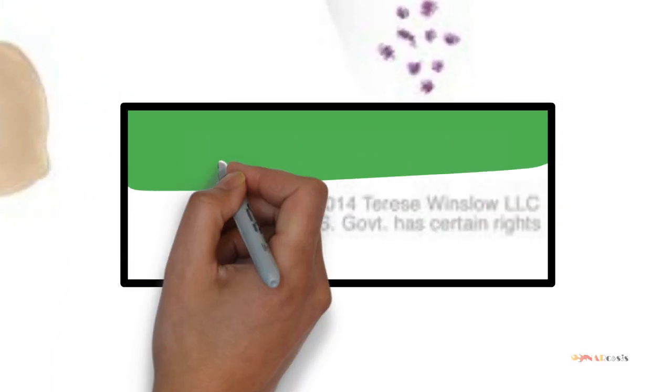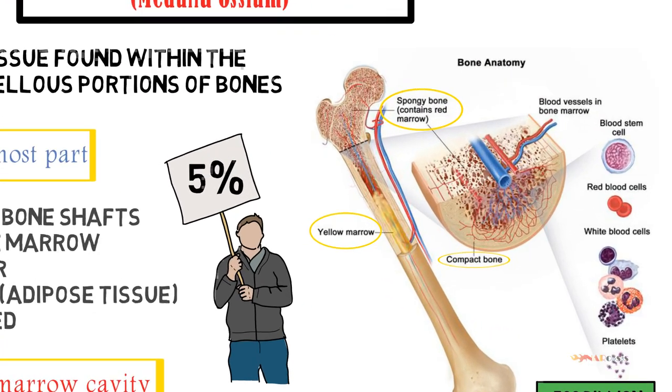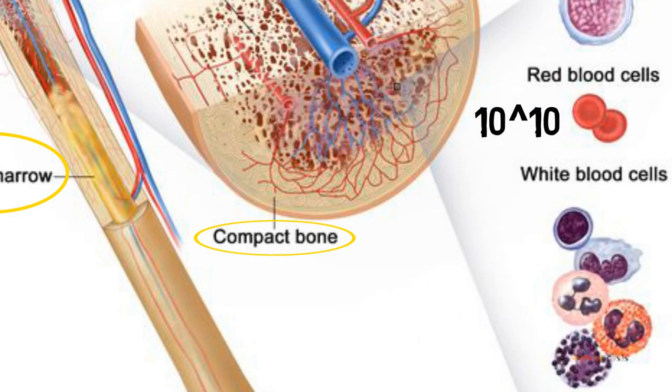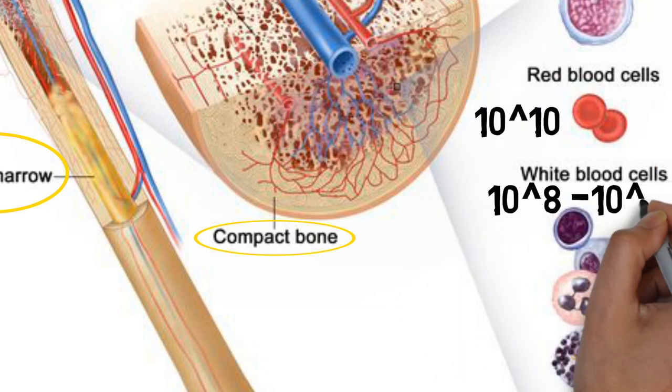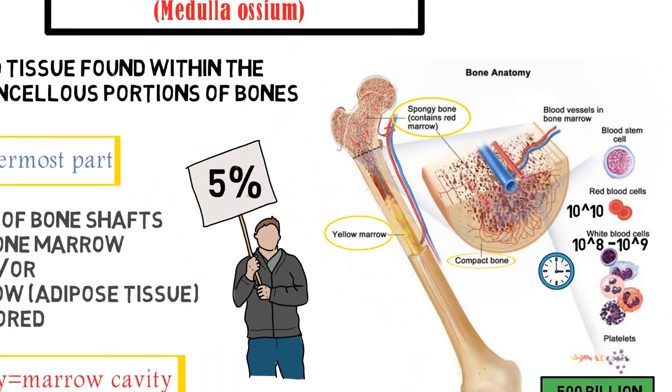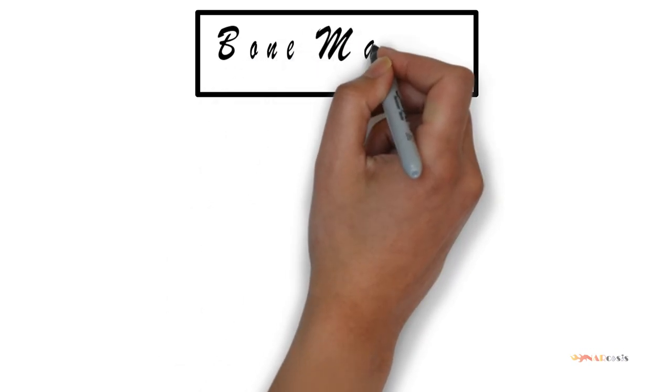The bone marrow comprises approximately 5% of total body mass in healthy adult humans and is producing approximately 500 billion blood cells per day. About 10 billion erythrocytes and 1 billion leukocytes are produced per hour in steady state.